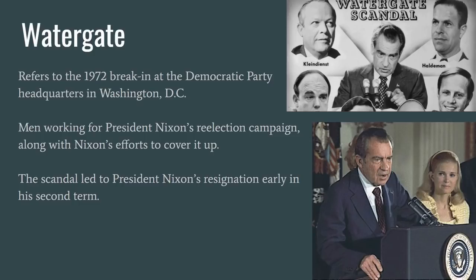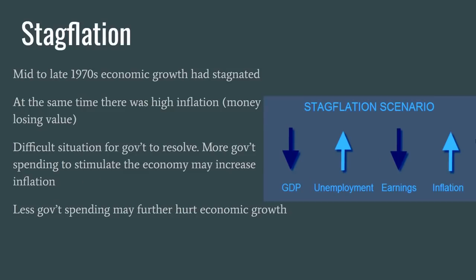In the mid to late 1970s, economic growth had stagnated. A variety of factors played a role, along with two separate oil shocks as Middle Eastern countries protested U.S. support of Israel. At the same time, high inflation meant money was rapidly losing its value. This put the government in a difficult position: increasing spending to stimulate the economy might increase inflation, while less spending might further hurt economic growth — a condition known as stagflation. We'll have to wait until Period 9 to see how this plays out, but to be a little spoilery, it will take huge tax cuts that will balloon the debt and the Federal Reserve hiking interest rates astronomically high.